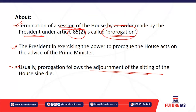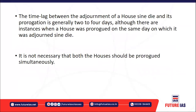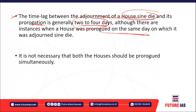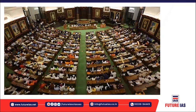Prorogation is not a discretionary power of the President; the President exercises this power on the advice of the Prime Minister or recommendations of the Cabinet. Usually prorogation follows adjournment sine die with a time lag of two to four days, but sometimes both can be done simultaneously. It is also not necessary that both Houses be prorogued simultaneously — the President prorogues the House whenever the Prime Minister sends the recommendation.